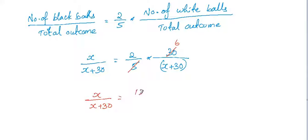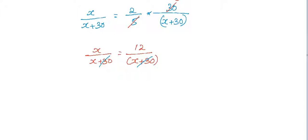So we have x plus 30 in both the denominators, so just cancel that out. And we can conclude that the value of x is 12.